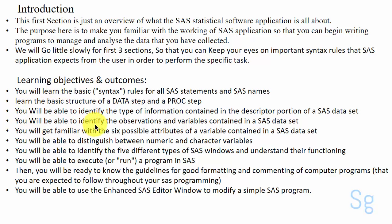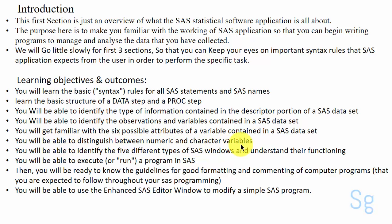You will be able to identify the observations and variables contained in a SaaS data set. You will get familiar with the six possible attributes of a variable contained in a SaaS data set. You will be able to distinguish between numeric and character variables. You will be able to identify the five different types of SaaS windows and understand their functioning, and you will be able to execute or run a program in SaaS.